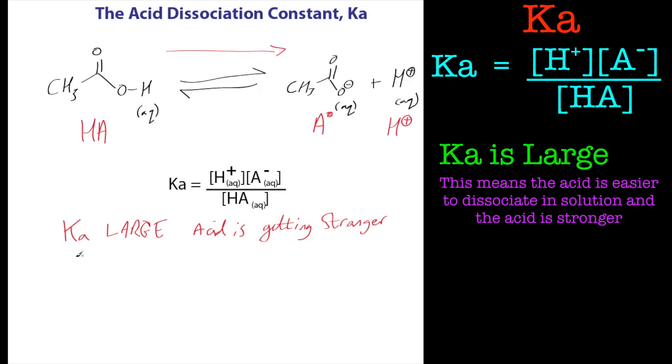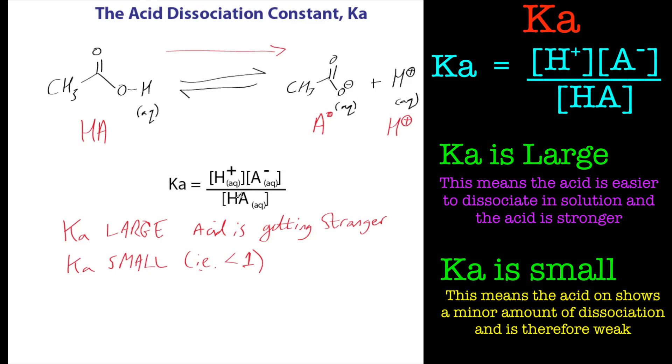If Ka is small, i.e. less than one, then that means it's getting weaker, the acid is getting weaker. And that's basically the acid dissociation constant.